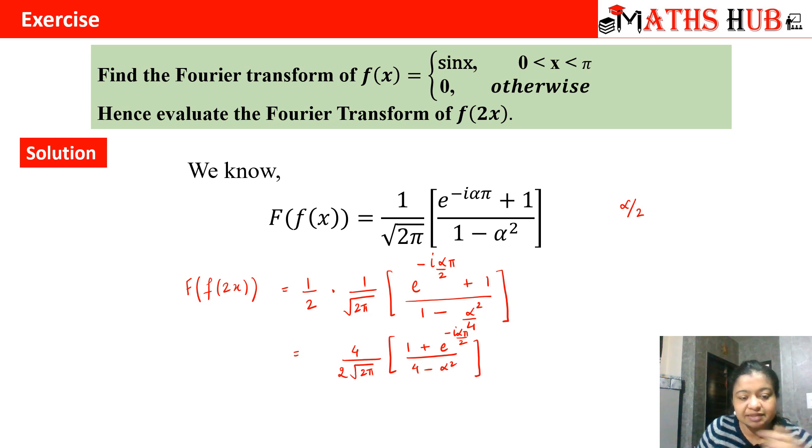You can easily cut off this 2 and make it under root 2. It will become under root 2 by pi, into 1 plus e to the power minus iota alpha pi by 2, divided by 4 minus alpha square.